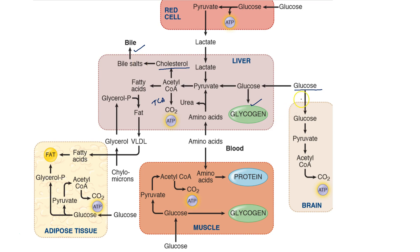In the muscle, glucose is used to provide energy via glycolysis, then pyruvate forms acetyl-CoA to enter the TCA cycle, and the extra glucose takes part in glycogen synthesis.